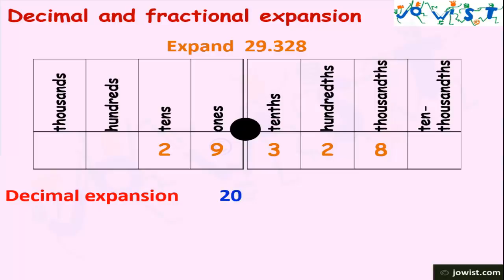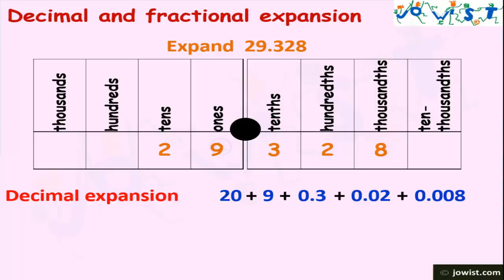Now let's understand the decimal expansion of this number. The number has two tens, so we will write 20. Plus we have nine ones, so we will write 9. Plus we have 3 tenths, that is 3 by 10, which can be represented as 0.3. Plus we have two hundredths, written as 2 by 100, equal to 0.02. Plus we have eight thousandths, that is 8 upon 1000, equal to 0.008.